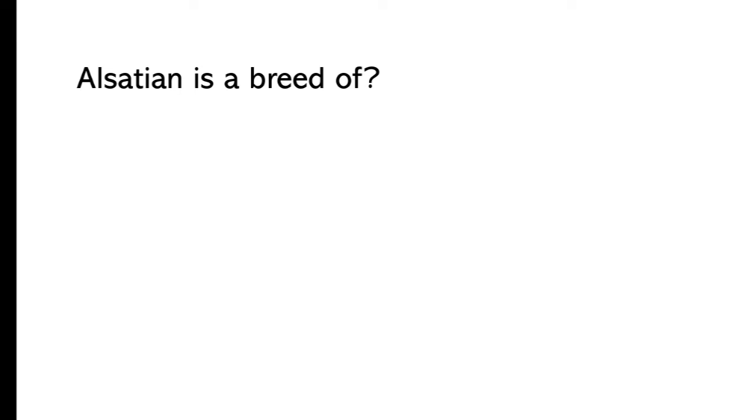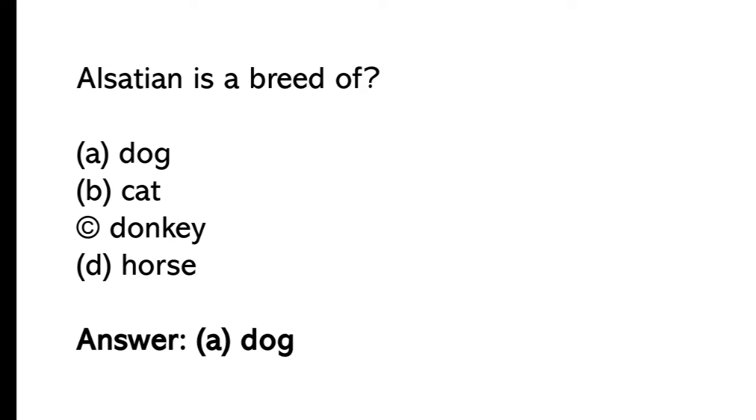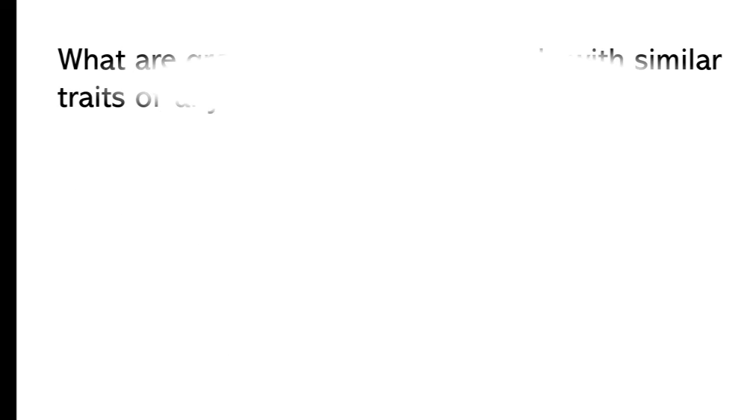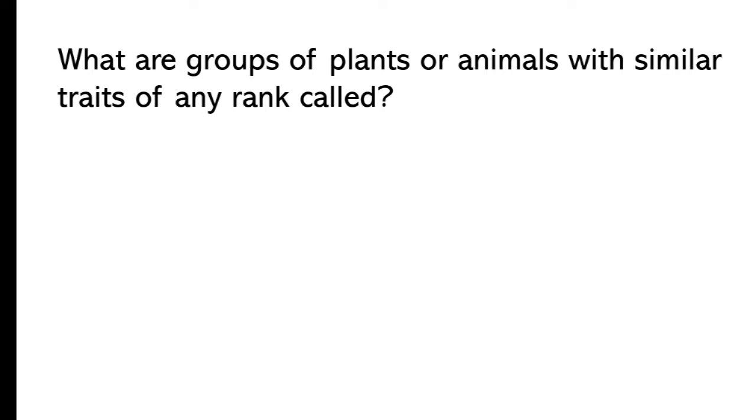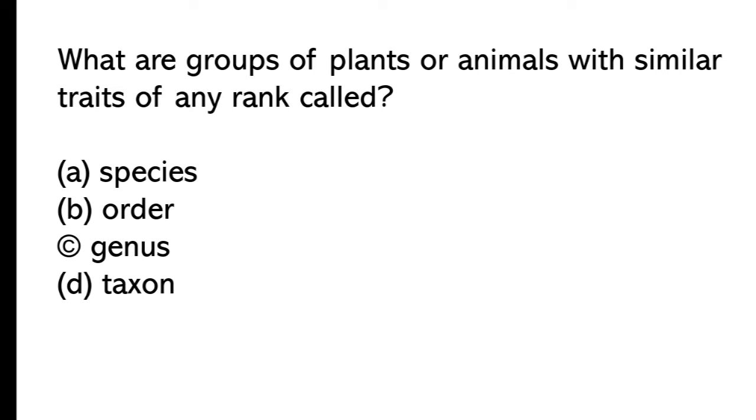Alsatian is a breed of: dog, cat, donkey, horse. So the correct answer is option A, dog. What are groups of plants or animals with similar traits of any rank called: species, order, genus, taxons? So the correct answer is option D, taxon.